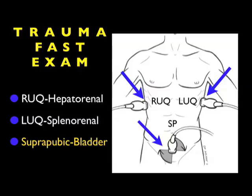There's a lot of information we can gain from looking at the suprapubic view, as we can potentially detect a smaller amount of fluid than is required to make a positive right upper quadrant or left upper quadrant view. The literature suggests that only about 100 to 200 cc's of fluid can be detected accurately on the suprapubic view.